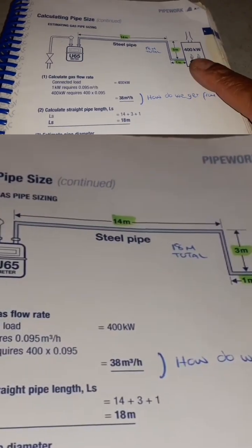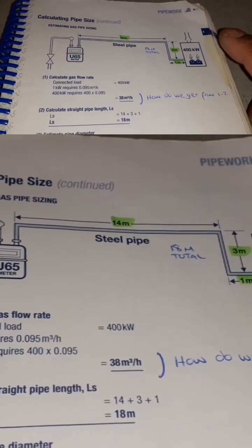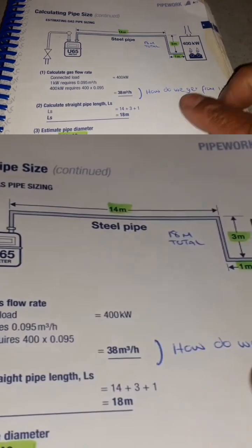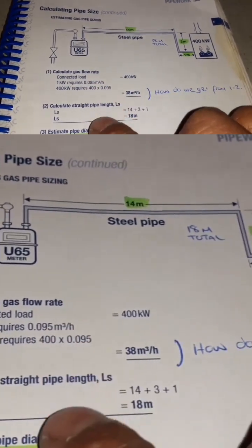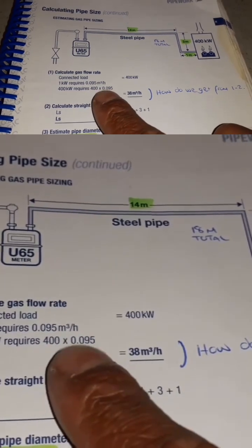We need to find out what size of pipe we need in order to supply the right flow rate. As you can see in this book here, it says calculate gas flow rate - connected load: one kilowatt requires 0.095 meters cubed an hour of gas.